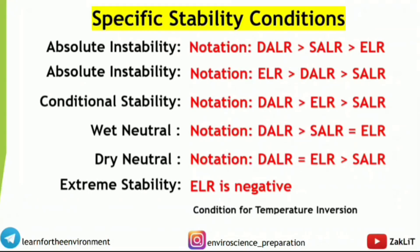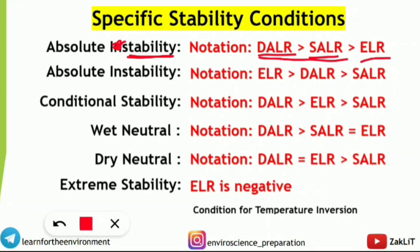Next topic is atmospheric stability conditions. For absolute stability: the Dry Adiabatic Lapse Rate (DALR) is highest, followed by the Saturated Adiabatic Lapse Rate (SALR), and least is the Environmental Lapse Rate (ELR). So the order is DALR > SALR > ELR for absolute stability.